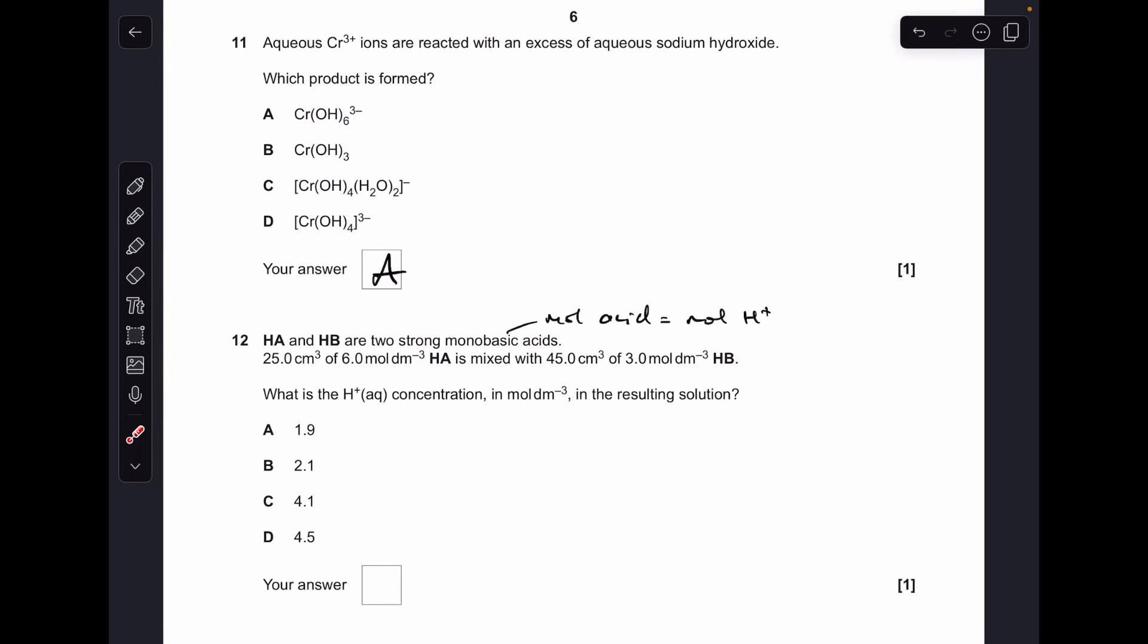Question 12, you can see next to monobasic I've said the moles of the acid is equal to the moles of the H+ ions. First thing I need to do is work out how many moles of each acid we've got, add them together and that'll give us the total moles of H+ ions in the solution. So we're doing two lots of concentration times volume, remember volume's got to be in decimeters cubed. Adding the moles together there's that many moles of H+. The total volume of the solution is going to be 45 cm3 plus 25 so that's 70 cm3, so the last thing we need to do is concentration equals moles divided by volume. That's coming out at 4.07 so you can see C is 4.1 so that's the answer.